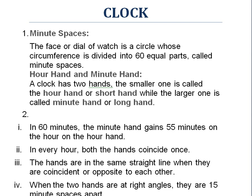In this lecture we will go with the basics, and in the next lecture we will solve some questions. What is a minute space? The face or dial of a watch is a circle whose circumference is divided into 60 equal parts called minute spaces. The face of the watch is always a circle, and its circumference is divided into 60 equal parts — each consists of 60 seconds. Simply put, one hour equals 60 minutes, and that circumference is divided into 60 equal parts called minute spaces.